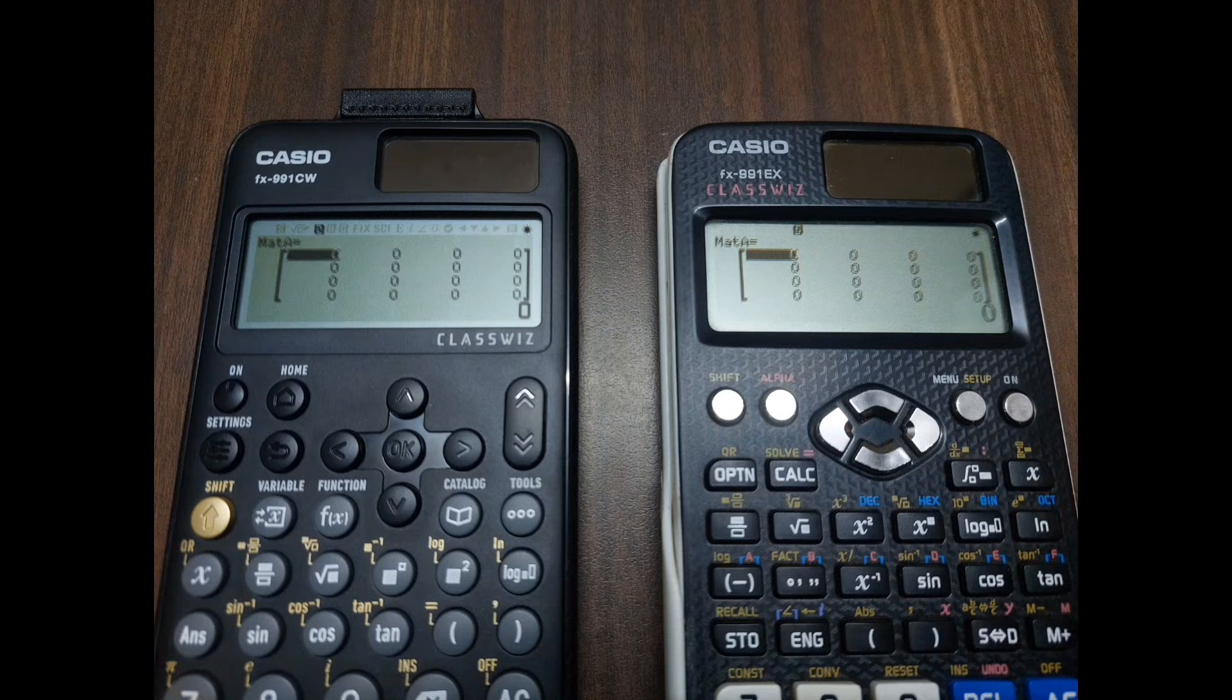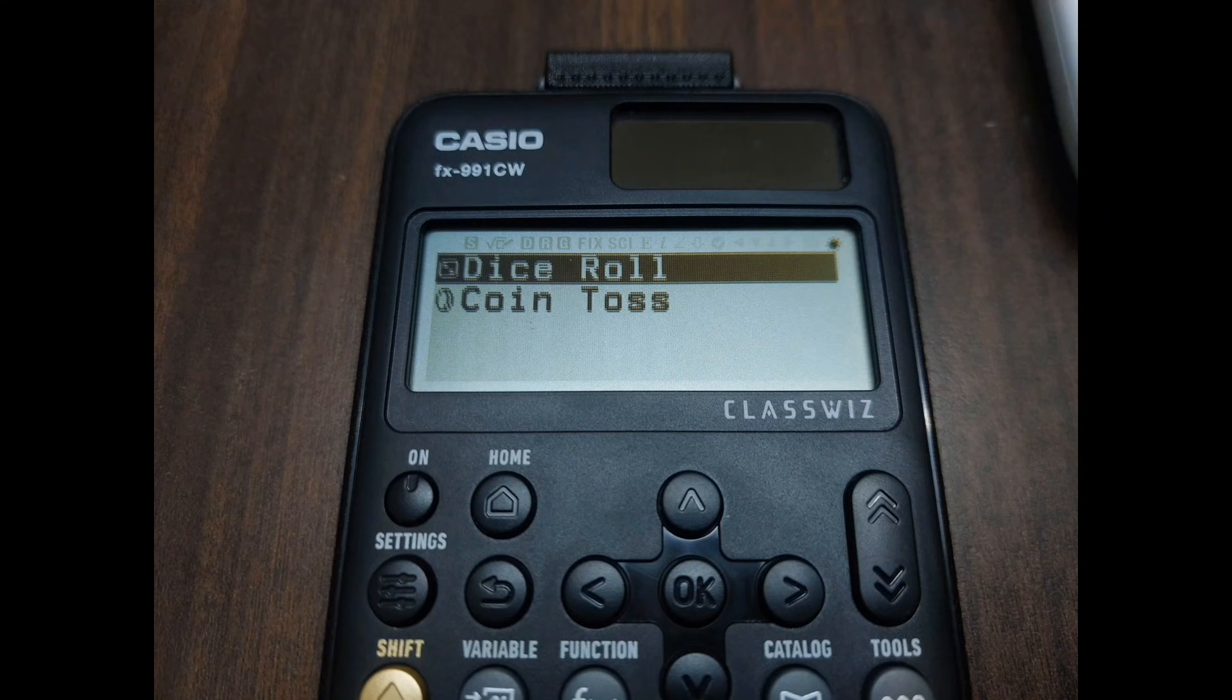Additionally, the FX991CW has one extra feature for calculating dice rolls and coin tosses, although this feature is rarely used.